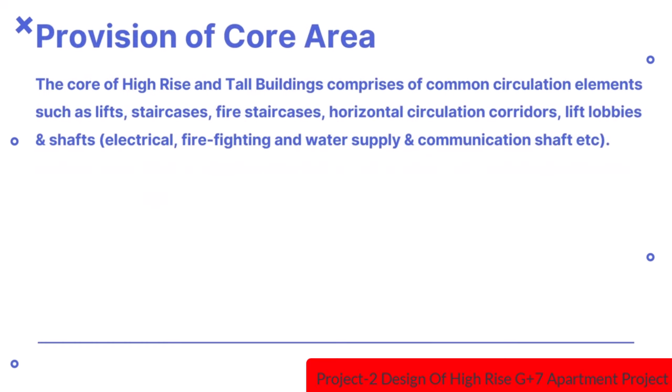Regarding provision of core area: the core of high-rise and tall buildings comprises of common circulation elements such as lifts, staircases, fire staircases, horizontal circulation corridors, lift lobbies and shafts. The core area required depends upon type of accommodation, height of building and plinth area. It varies with number of staircases, lifts, width of corridor and additional mandatory spaces required in a building.